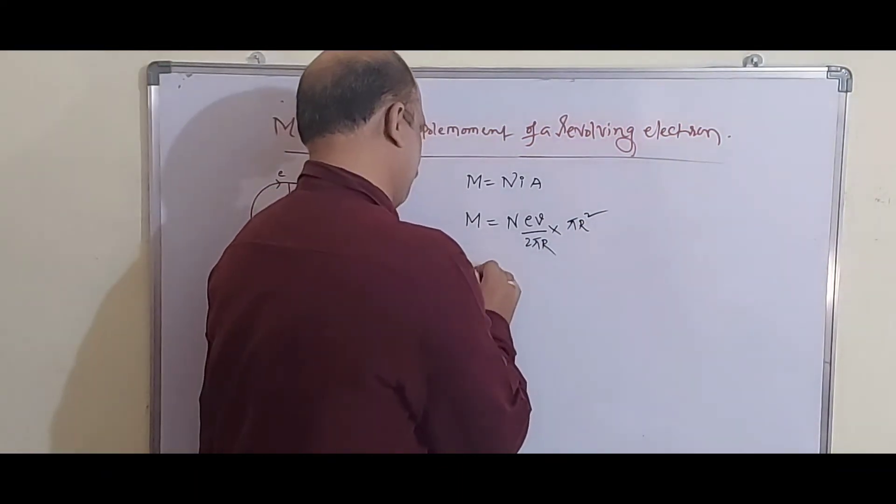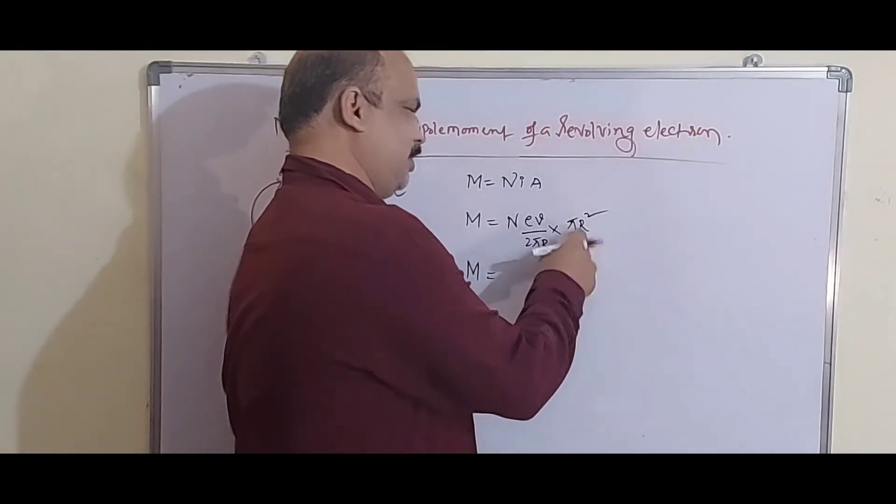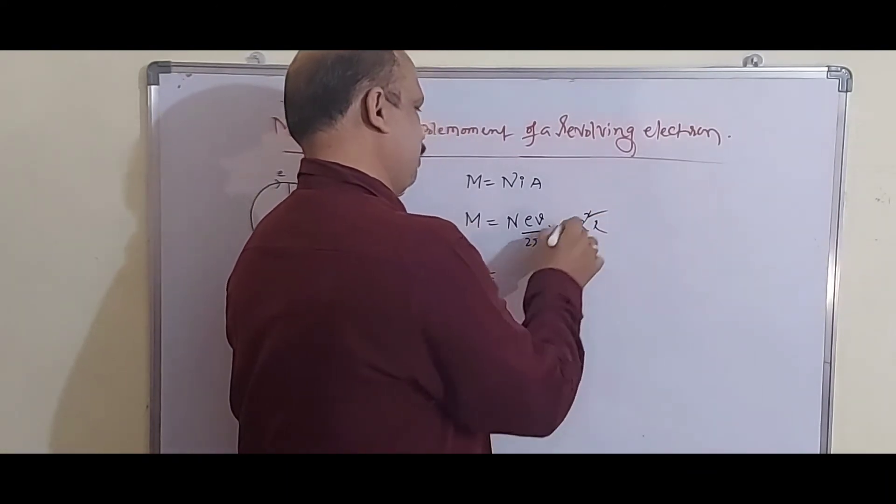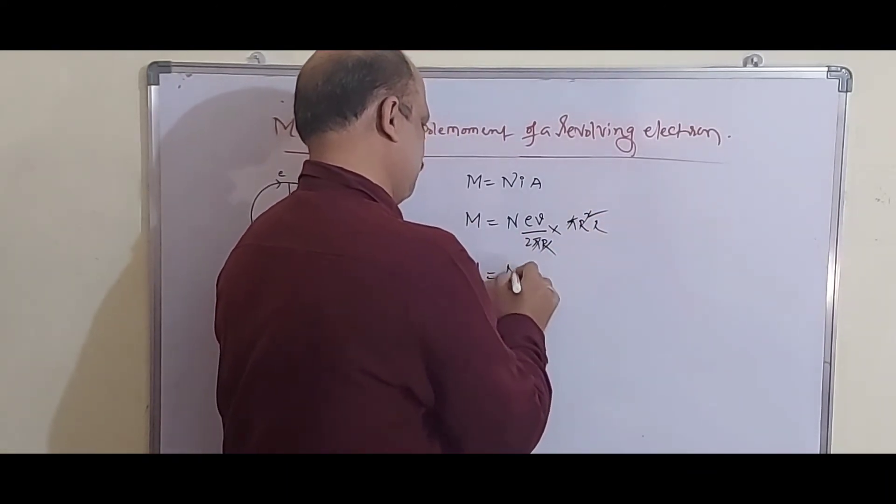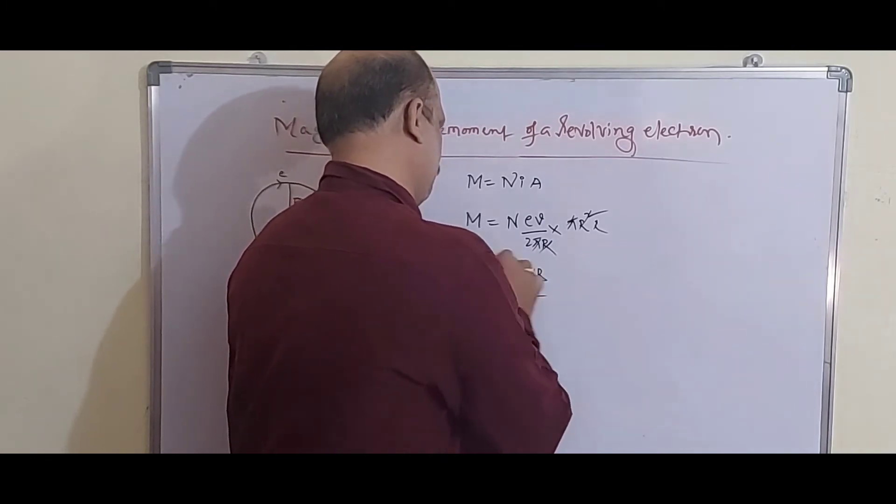So here, the magnetic dipole moment of the revolving electron: r cancels with r, π cancels with π. M equals NEvr divided by 2.